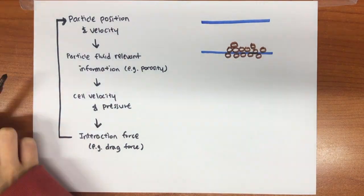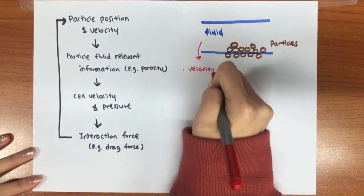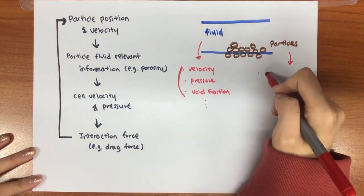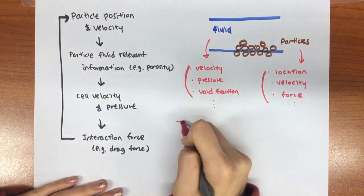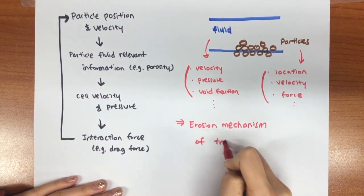From the simulation, we can get fluid properties like fluid velocity, pressure, void fraction, and particle properties like particle location, velocity, and applied force. Using this information, the erosion mechanism can be defined.